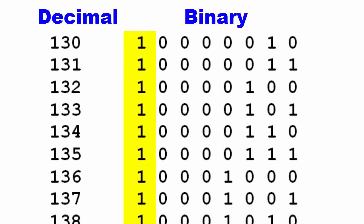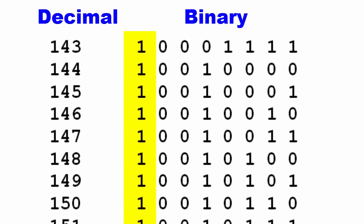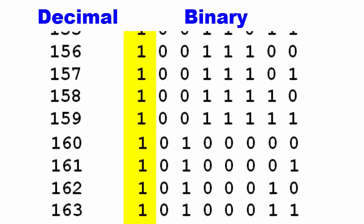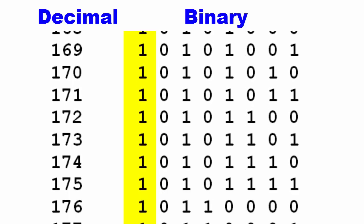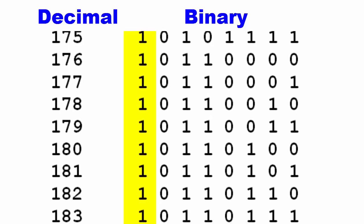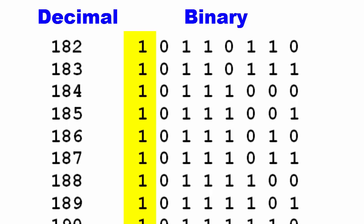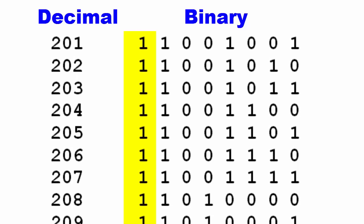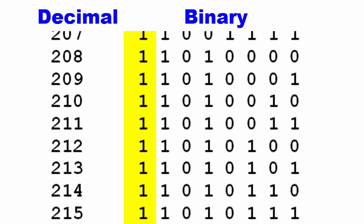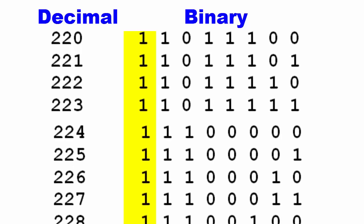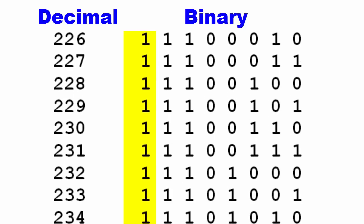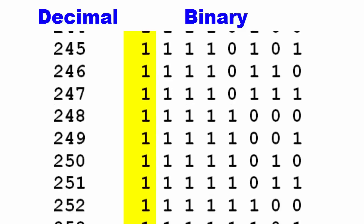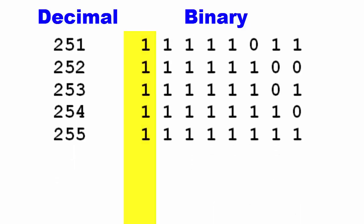Notice how the most significant bit, the one on the left, is 0 for the first half — the numbers going from 0 through 127 — and 1 for the second half, the numbers going from 128 through 255. This means that if we only use half our brightness, we are still getting 7 bits worth of data.